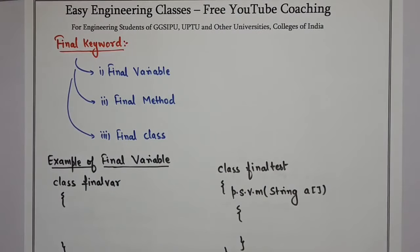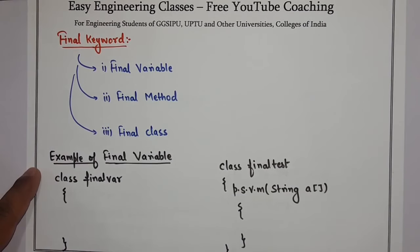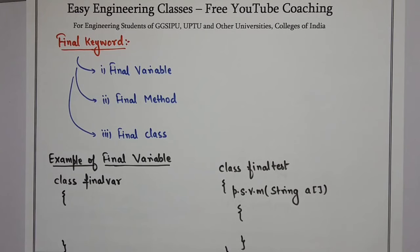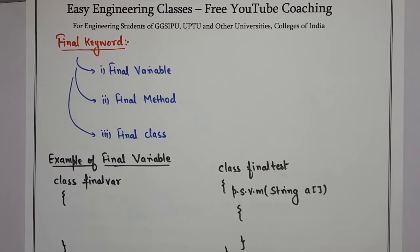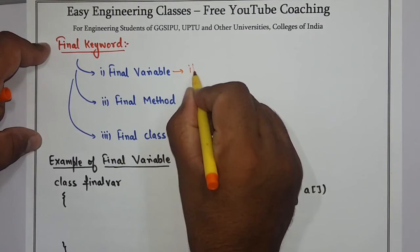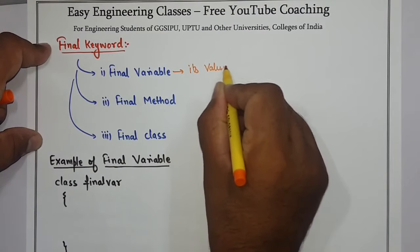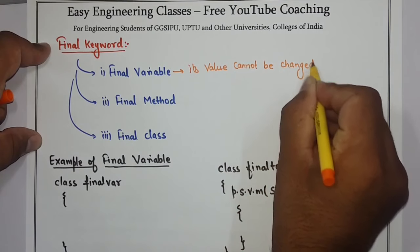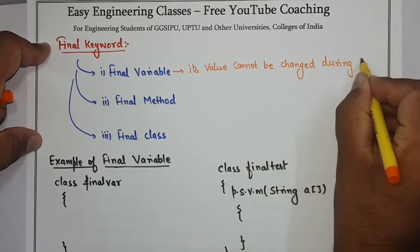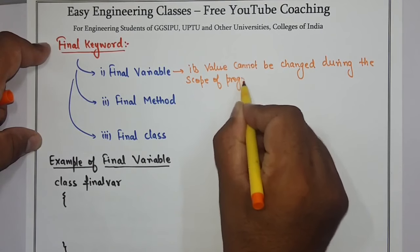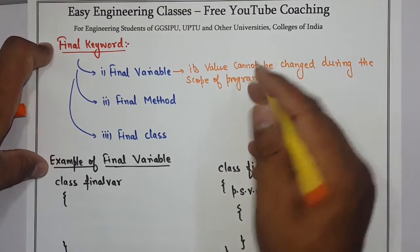Hello students, welcome to Easy Engineering Classes. Today we will see a very important concept of Java which is the use of the final keyword. The final keyword can be used in three different ways in Java. First, if you have a final variable, once a variable is declared as final, its value cannot be changed — it is a constant value during the scope of the program.